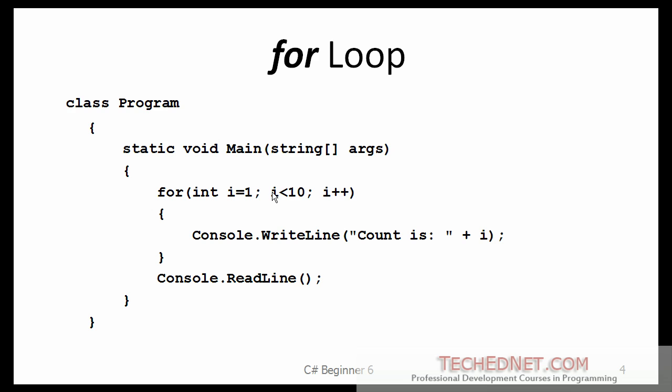Let us talk about how this FOR loop works. When you enter the FOR loop, you are initializing the counter variable i to 1. Immediately after that, it will check the condition: is i less than 10? The answer is yes, so it will go through the loop and encounter the statement to generate the output.